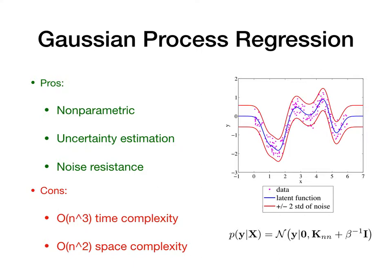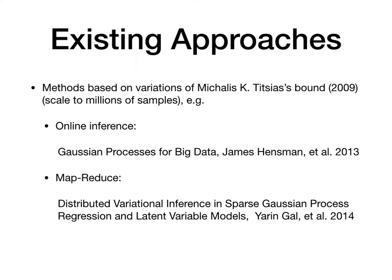Many existing methods have been developed to scale GP to large datasets. Some of them are based on the work of Titsias's variational lower bound, which could scale the data up to millions of samples. For example, the online stochastic inference introduced by Hensman and the synchronous updates using the MapReduce framework developed by Gal. However, these models can only scale to millions of data points, which still cannot meet real-world needs where we can expect billions of data points.